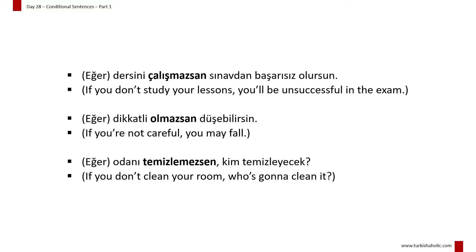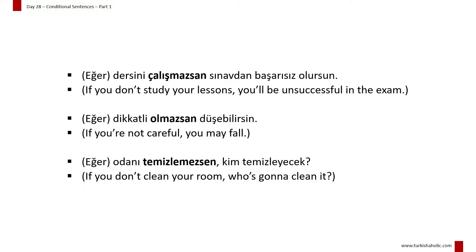Unlike real conditional sentences, where the condition is real and not imaginary, unreal conditionals are about imaginary conditions. If an imagined condition is achieved, another imaginary action will happen. When conjugating a verb into the unreal conditional, we add the conditional suffix se/sa right after the verb root and end it with the personal suffix. We don't have a tense suffix for unreal conditionals, while the main clause uses the present simple with the past simple personal suffix. Be sure to check the last vowel in the verb root to select the correct conditional suffix.